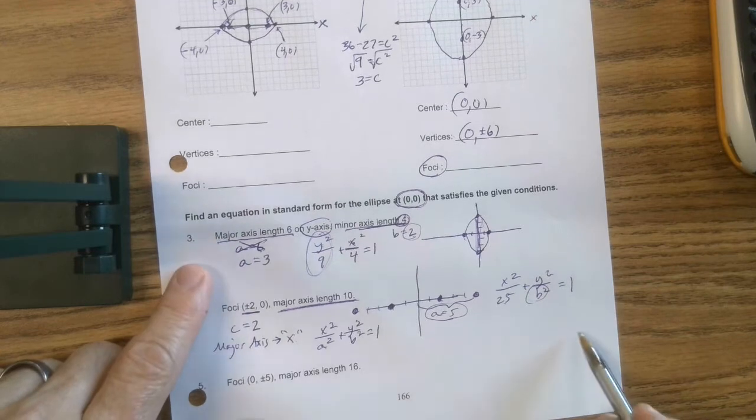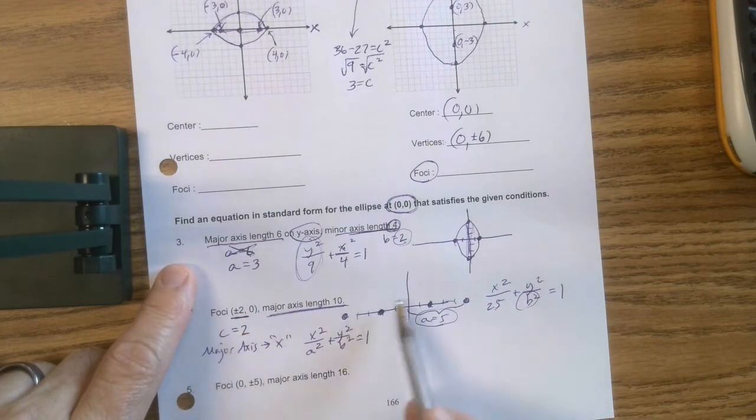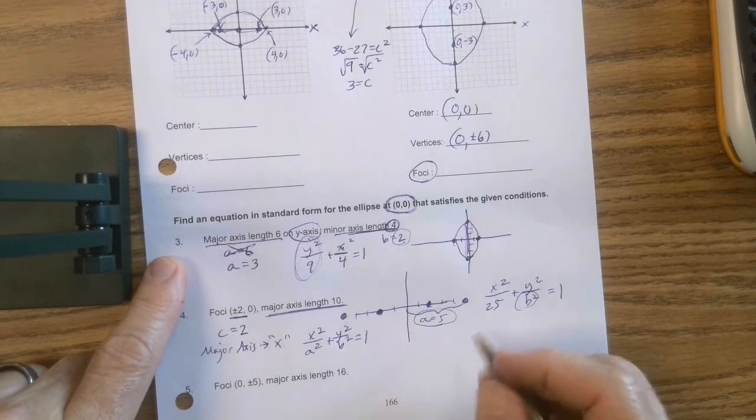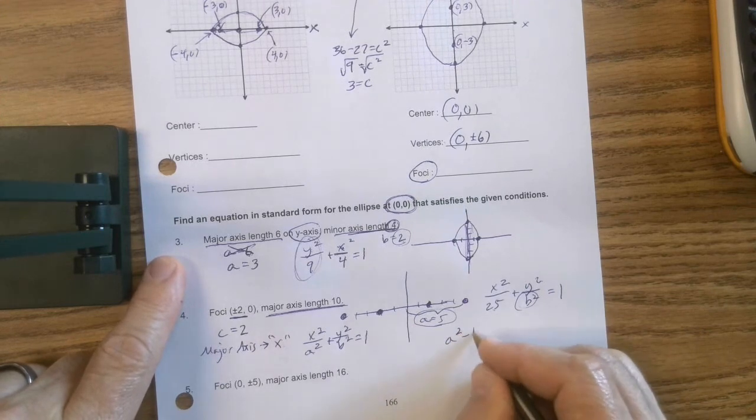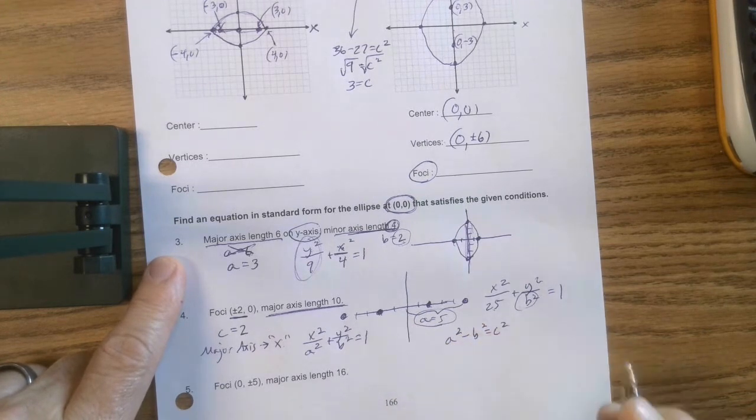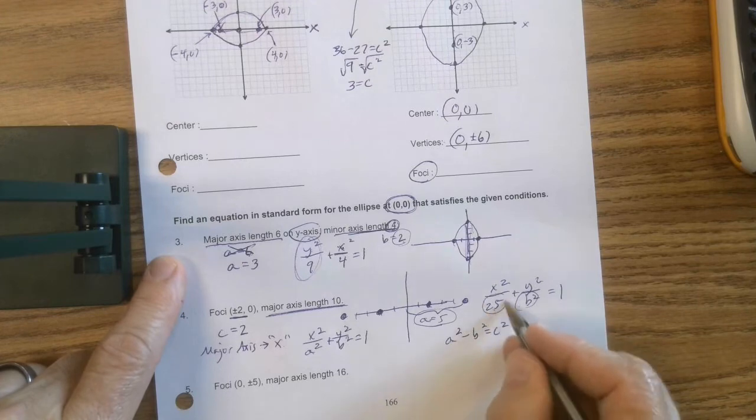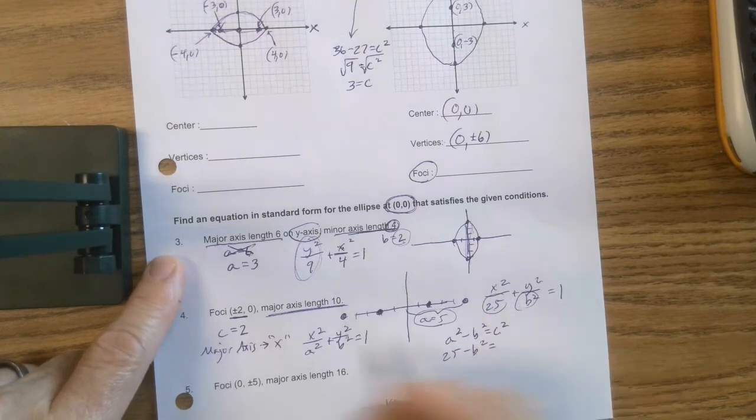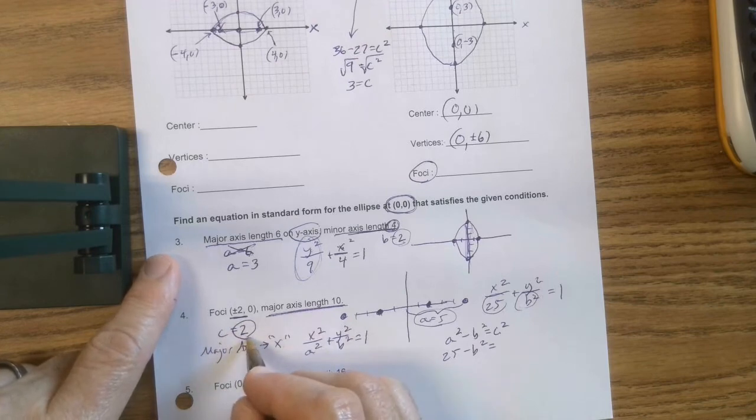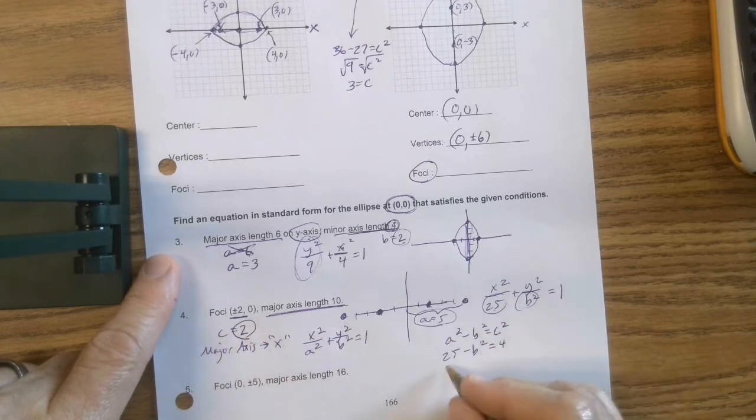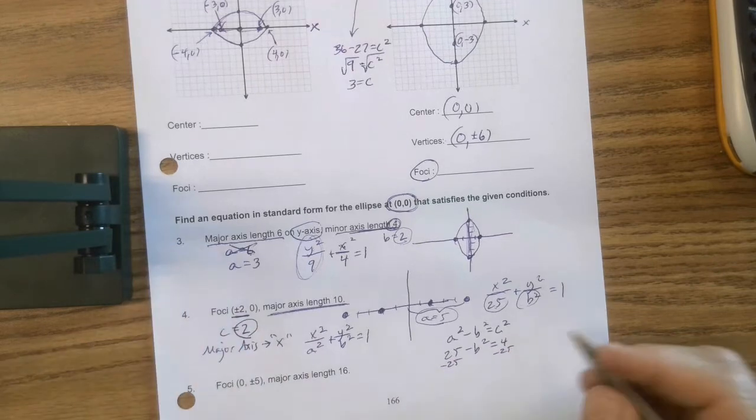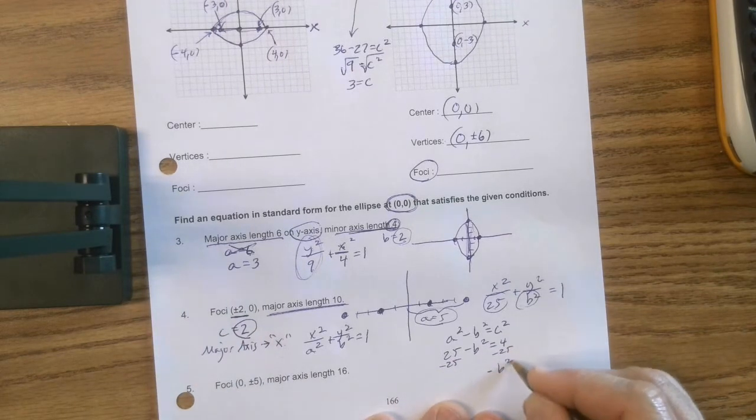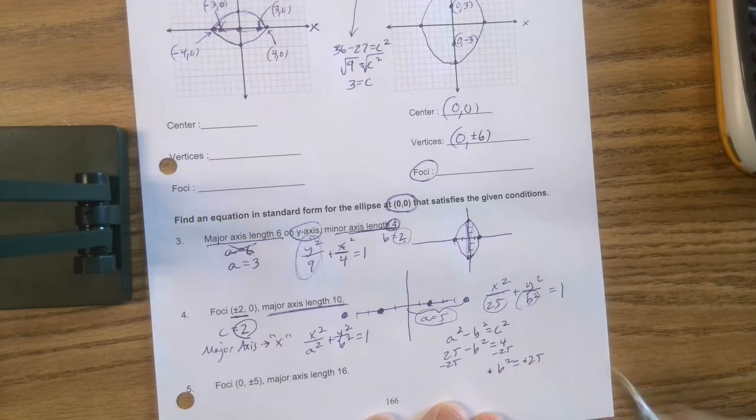So I need to figure out what b squared is. And so with that in mind, I know that c is 2. I know that a is 5. And I know this formula. a squared minus b squared equals c squared. Now watch this. So a squared is 25 minus b squared equals c squared, which is just c squared. So that would be 4. So if I subtract 25, subtract 25, I would get negative b squared equals negative 25.